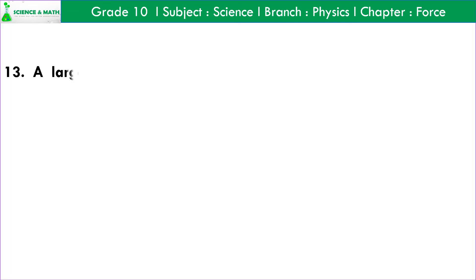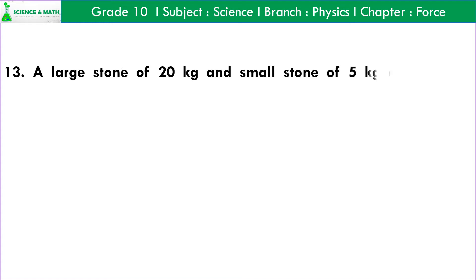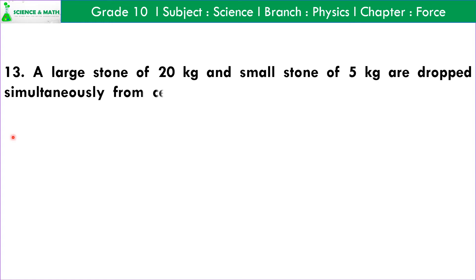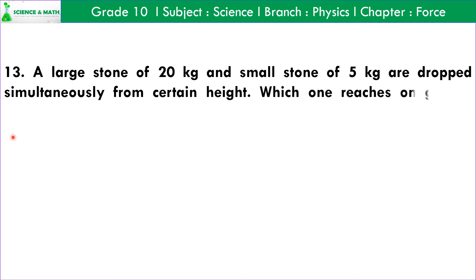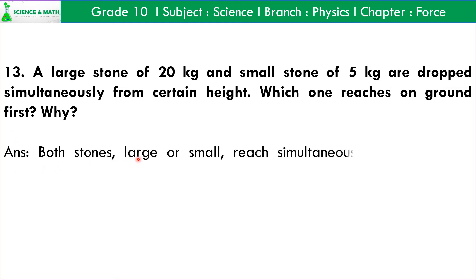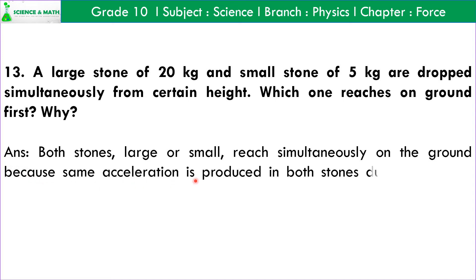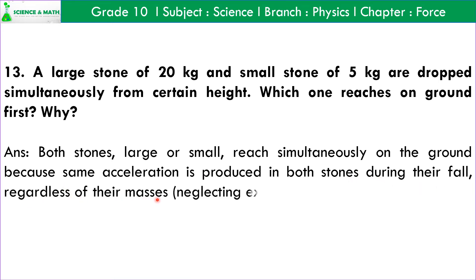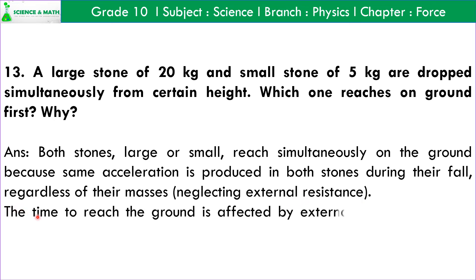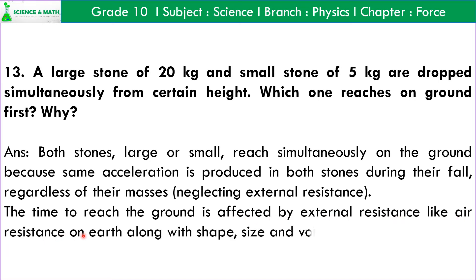Question number 13: A large stone of 20 kg and a small stone of 5 kg are dropped simultaneously from a certain height. Which one reaches the ground first? Answer: Both stones, large and small, reach the ground simultaneously because the same acceleration is produced in both stones during freefall regardless of their masses, neglecting external resistance. The time to reach the ground is affected by external resistance like air resistance, along with the shape, size, and volume of the falling objects.